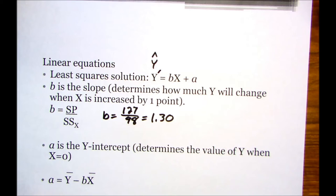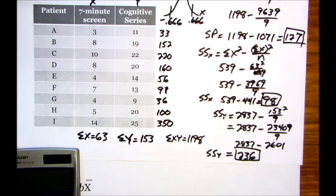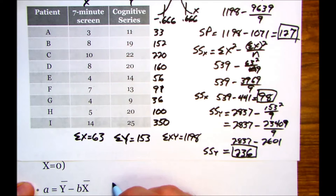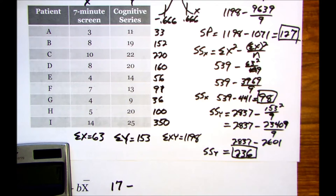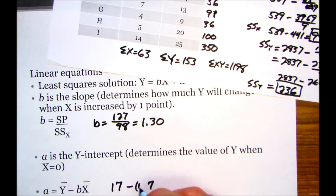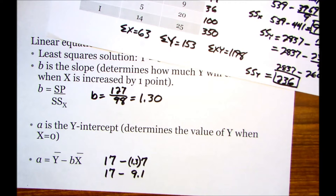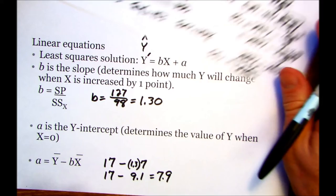Next is the, we'll be calculating the y-intercept. So we need the mean of y and the mean of x for each of these. So the mean of y, 153, right? If we sum up all the y-scores, we get 153 divided by our sample size, which was 9. The mean of y is 17. The mean of x, 63, divided by 9, 7. And then, our slope, we just calculated to be 1.3. 7 times 1.3 gives us 9.1. 17 minus 9.1, 7.9.